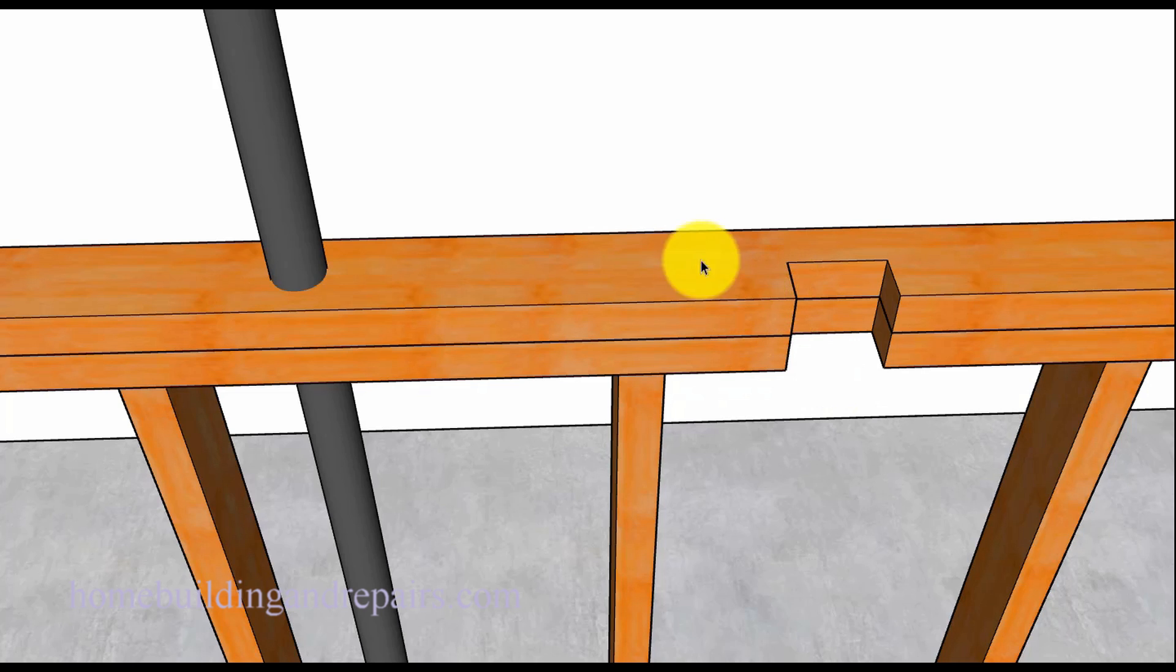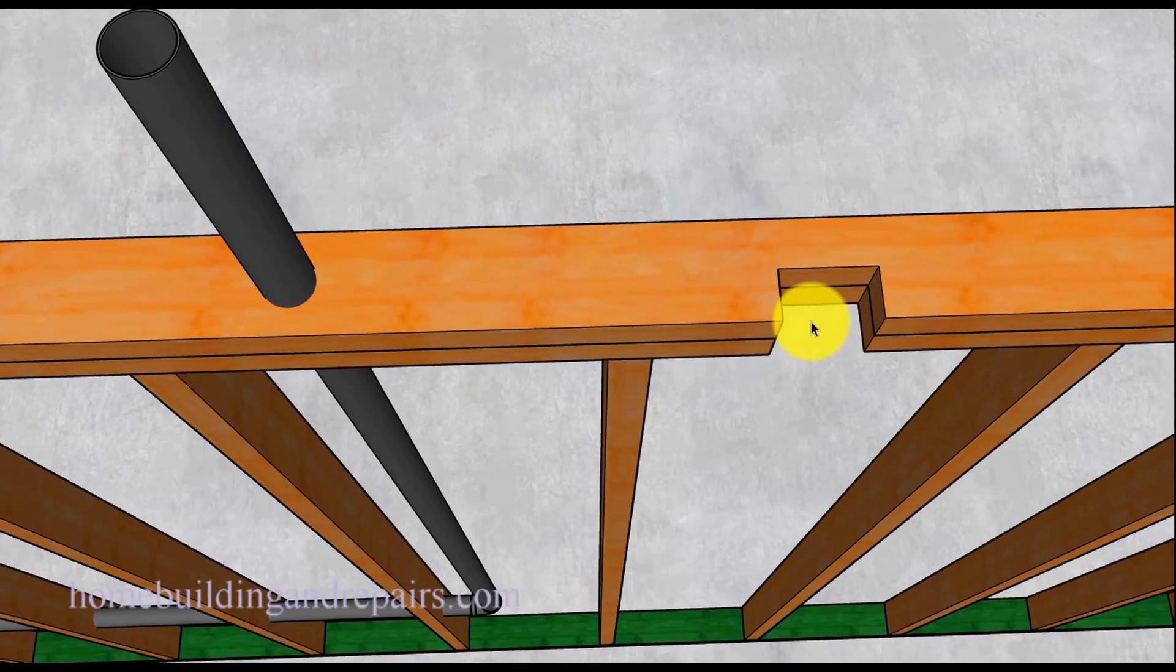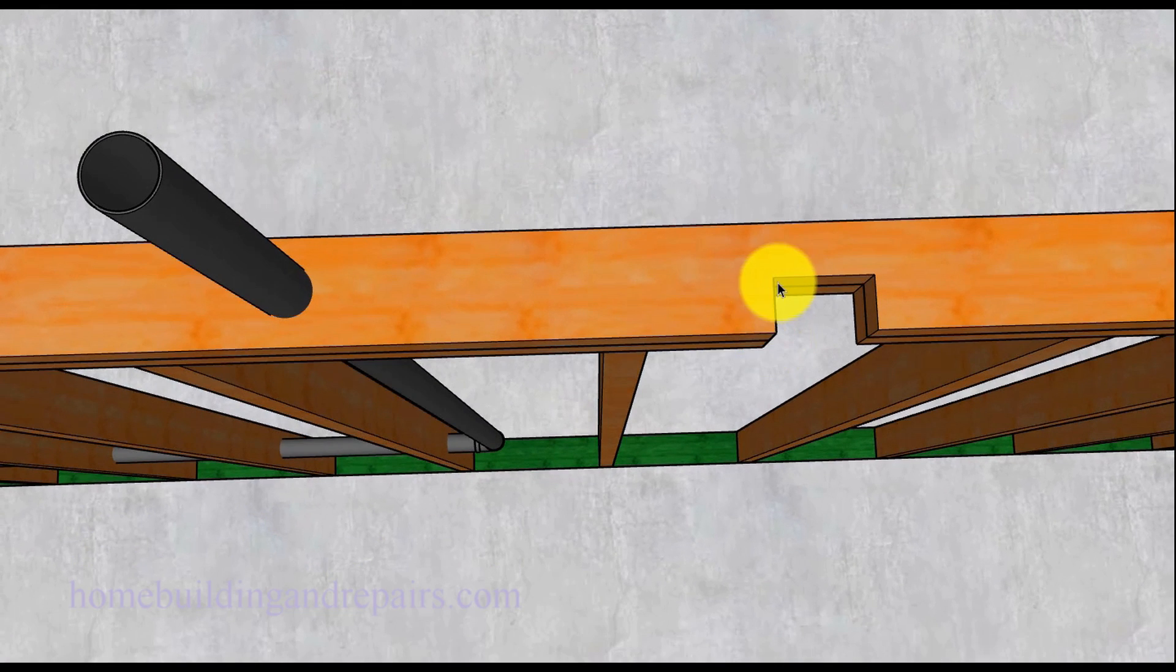So let's take a look at the top framing plate. What they're requiring is a strap on anything with a 50 percent or greater notch in the wall framing plate. On a 2x4 that would represent one and three quarter inches.